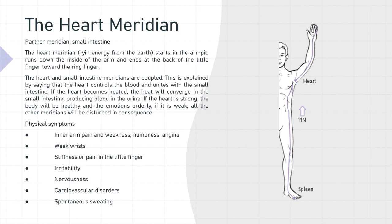The physical symptoms of heart meridian imbalance are inner arm pain and weakness, numbness and angina, weak wrist, stiffness or pain in the little finger, irritability, nervousness, cardiovascular disorders, and spontaneous sweating.